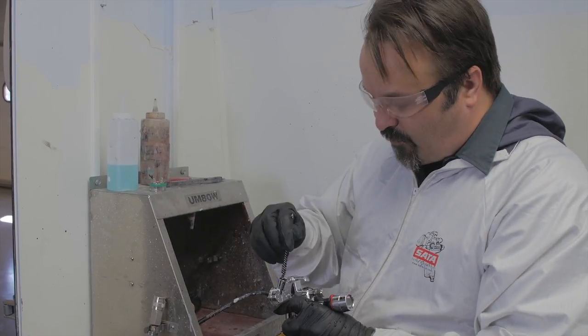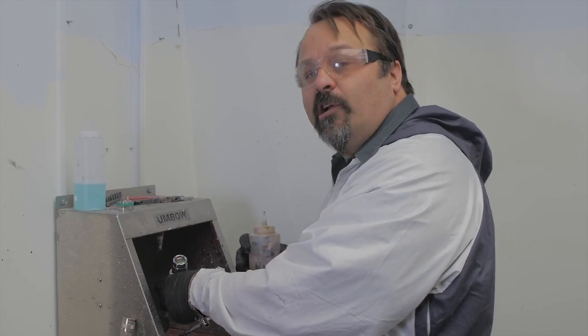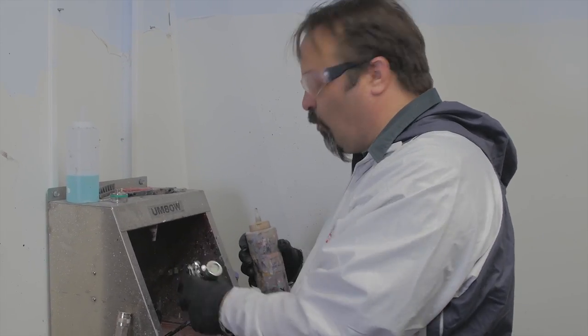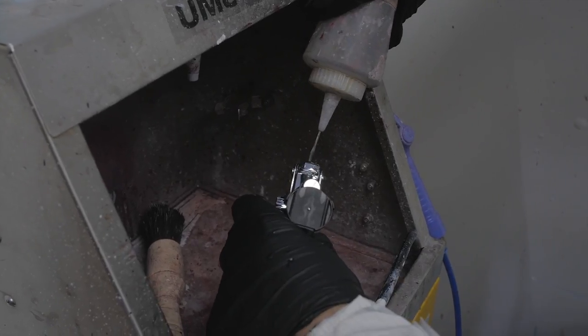Now I've got a small brush that comes with all the SATA guns that I can brush this out. The gun cleaner we're using in here is a spray gun cleaner for water, but I've also got just pure water that I'm going to give it a rinse with to remove any of the high pH.